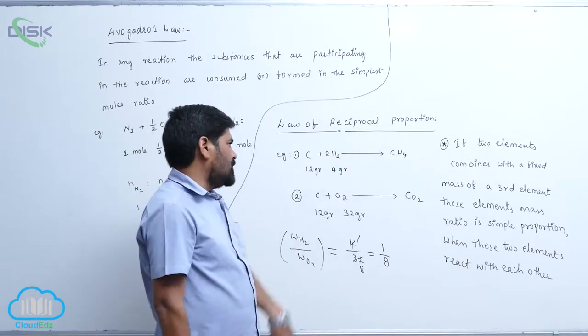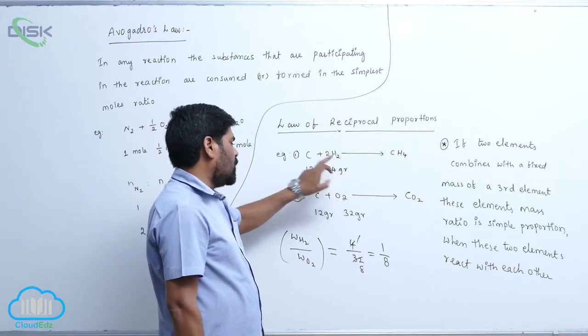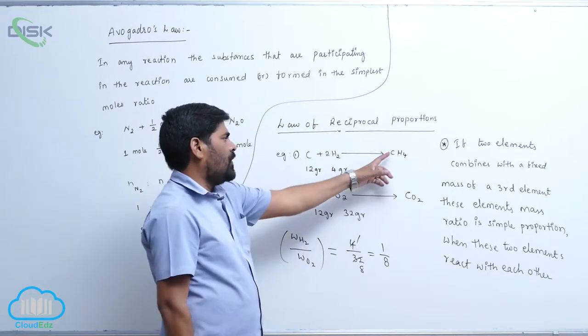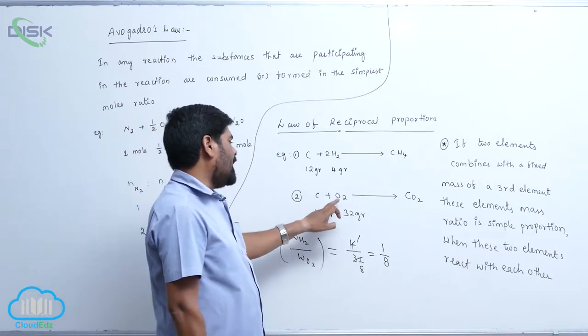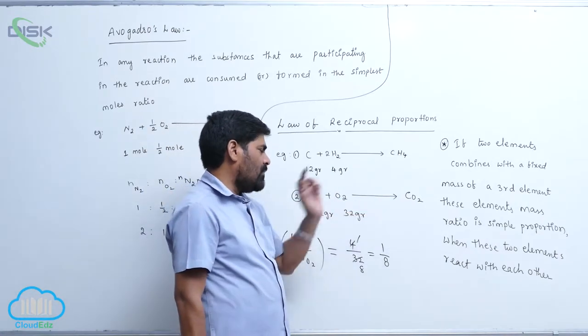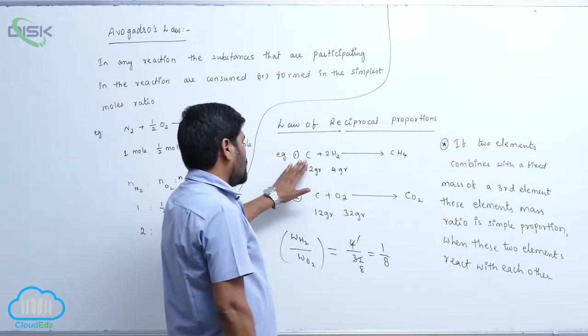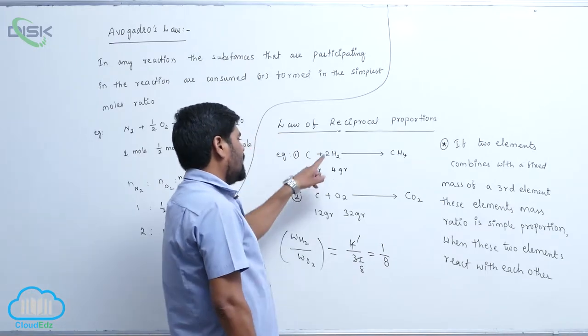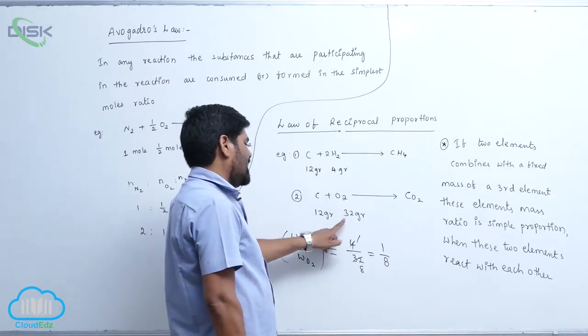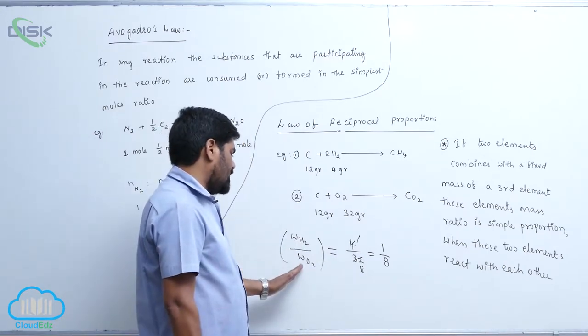Law of reciprocal proportions: carbon combined with hydrogen to form methane, carbon combined with oxygen to form carbon dioxide. In this, the mass of carbon is fixed. But here 4 grams of oxygen, here is 32 grams of oxygen, so therefore the weight of hydrogen is...